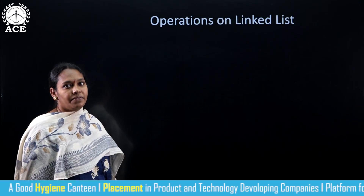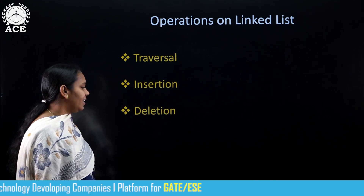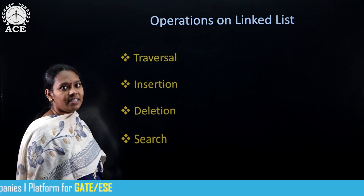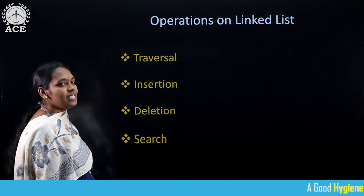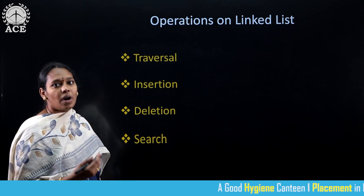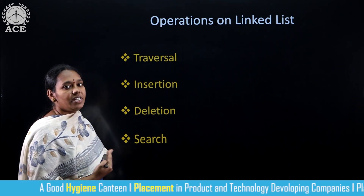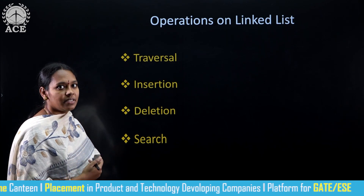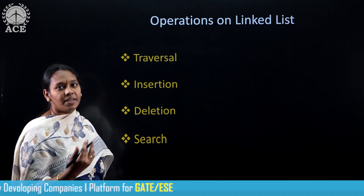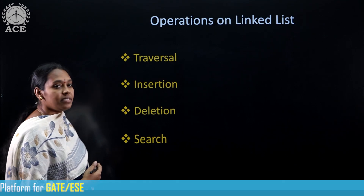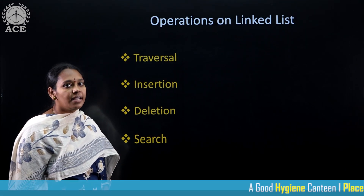Now let us see the different operations which we can perform on a linked list. The first one is traversal, then insertion, deletion, and search. Traversal is used to access the elements from the list. Insertion is used to add a new element to the list anywhere in the list. Deletion operation is used to remove an element from the list. Search is used to find out an element from the list. These are the different operations which we can perform on a linked list.